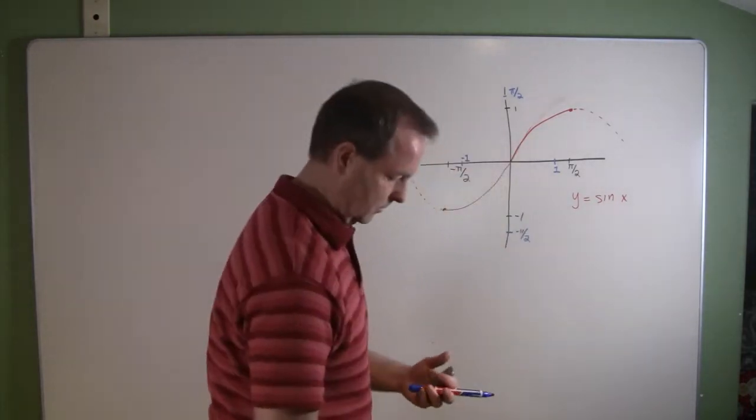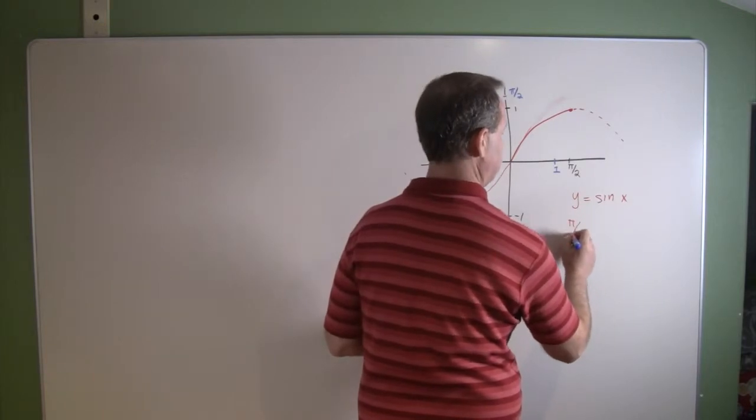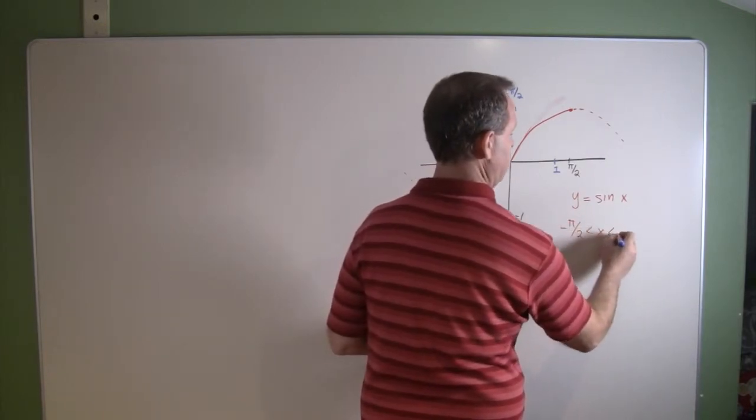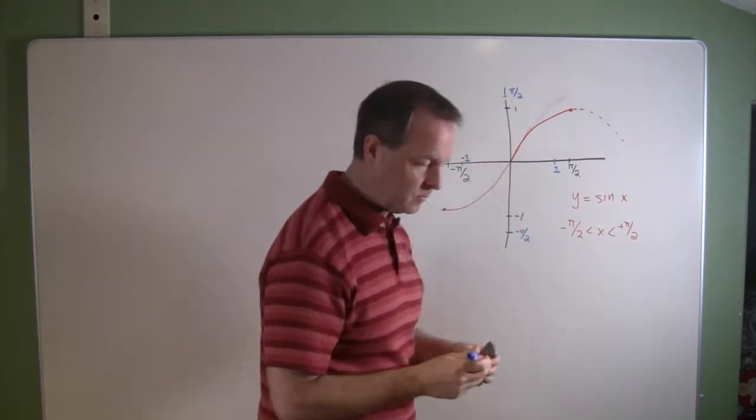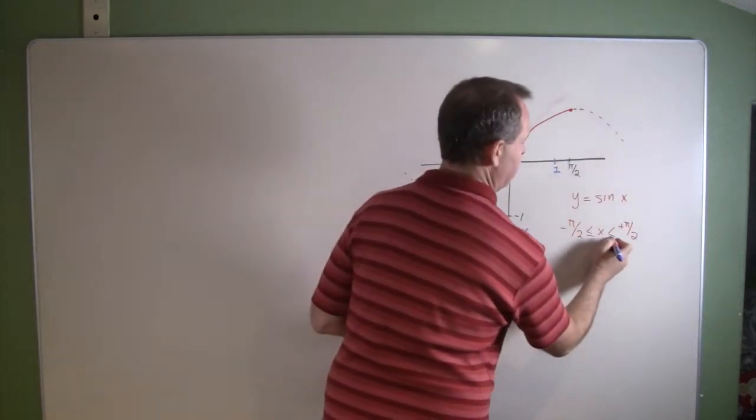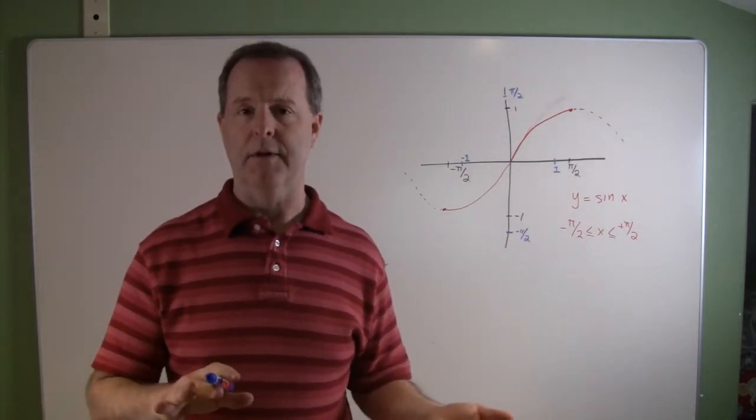We have a restricted domain where x is greater than or equal to negative pi over 2 and less than or equal to pi over 2. So given those initial conditions, we can now talk about its inverse.